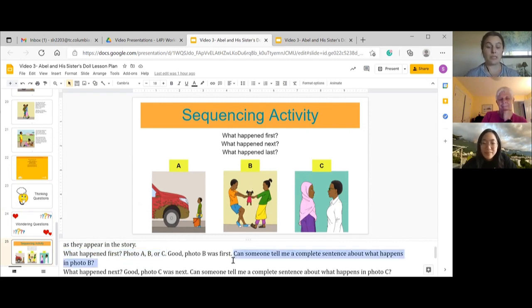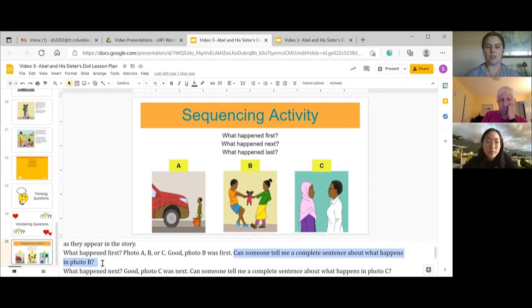And can someone tell me a complete sentence about what happens in photo B? Mabel and Abel and Mary are pulling on the doll's arm to try to get the doll. Yeah, nice. So first, Abel and Mary are pulling on the doll's arms to try to get the doll. Good.